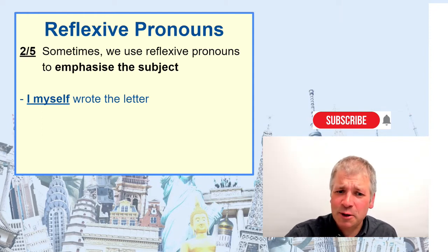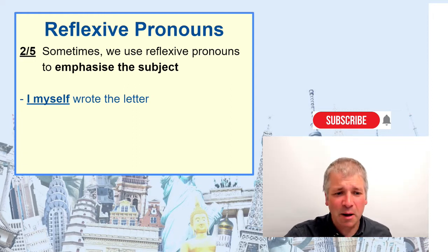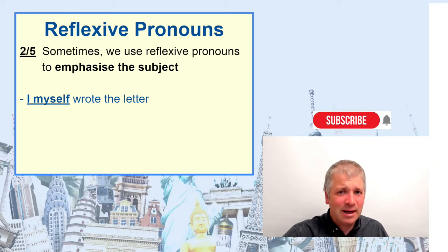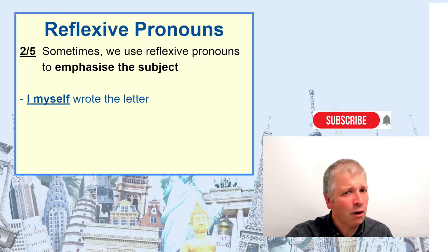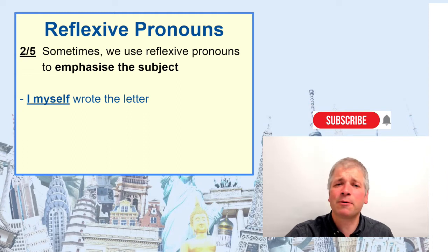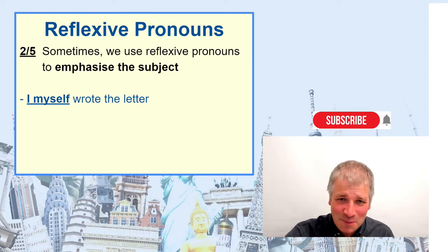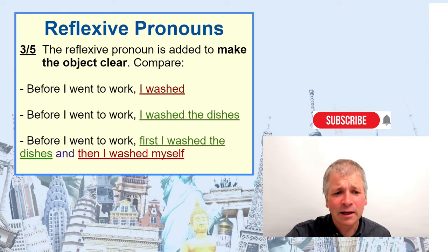Secondly, sometimes we use reflexive pronouns to emphasize the subject. Look at the example: 'I myself wrote the letter.' Here, 'myself' is not grammatically necessary, but by adding 'myself' after 'I,' I am making it even clearer — or emphasizing the fact that I did it. Perhaps it was a surprise: who wrote the letter? I wrote it. I myself. Really, it was me. So it brings emphasis to the subject.